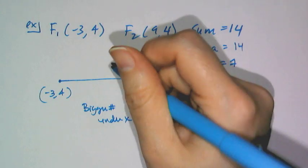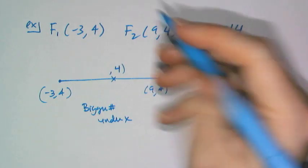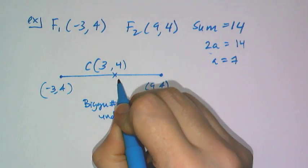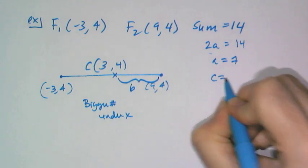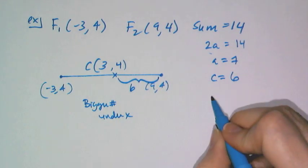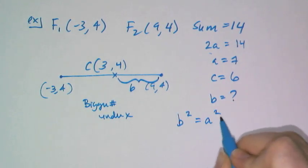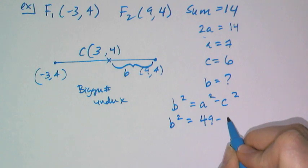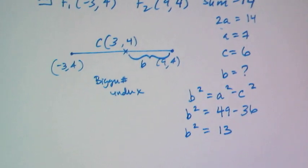Now I have to find the center by finding the midpoint of the segment between the foci. The midpoint is something comma 4, and midway between negative 3 and 9 is 3, so the center is at 3, 4. Going from 3 to 9 is 6 units, so c equals 6. Using b squared equals a squared minus c squared: a squared is 49, c squared is 36, giving b squared equals 13.